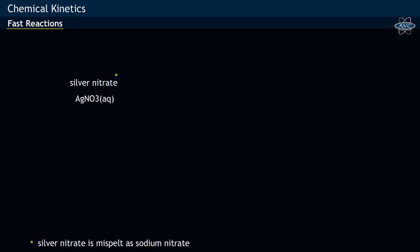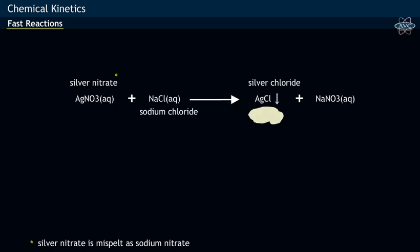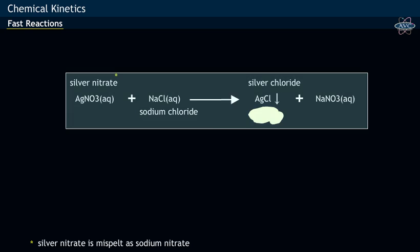Similarly, when aqueous silver nitrate is added to sodium chloride solution, a white precipitate of silver chloride is formed immediately. This is a precipitation reaction.